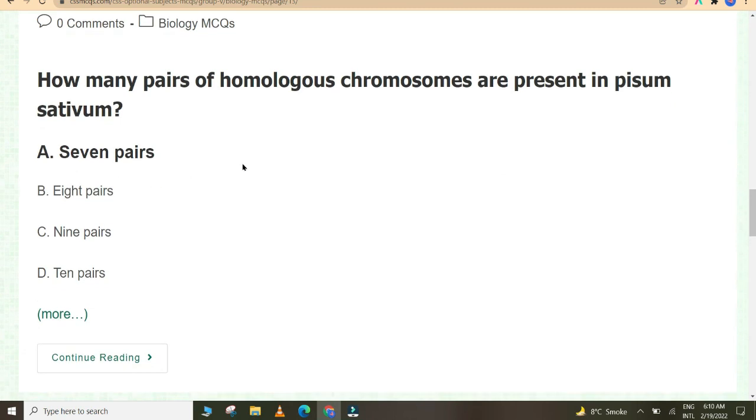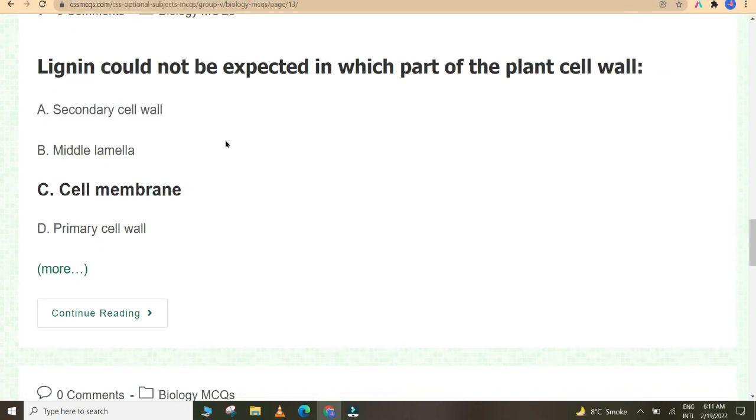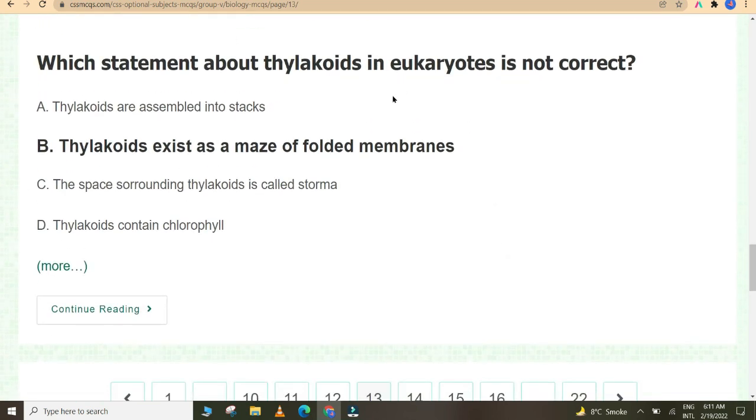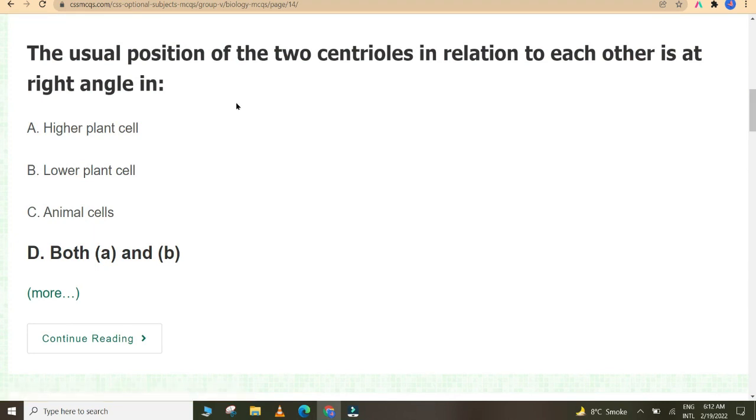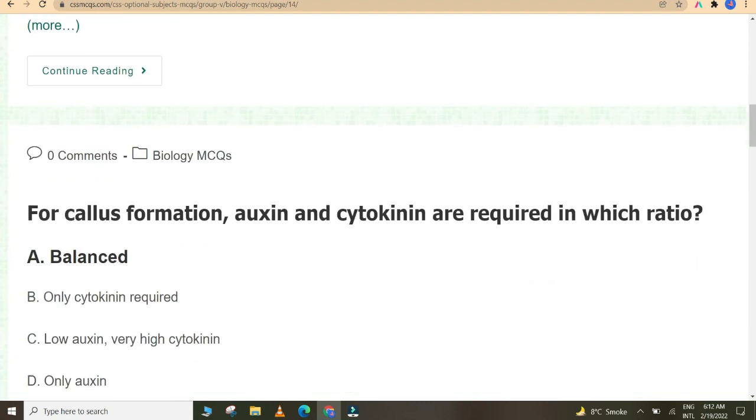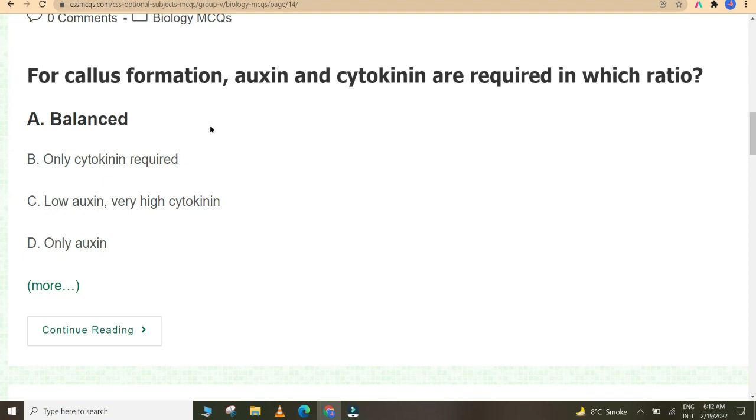How many pairs of homologous chromosomes are present in Pisum sativum? Seven pairs. Lignin could not be expected in which part of the plant cell? Cell membrane. Which statement about thylakoids in eukaryotes is not correct? Thylakoids exist as a maze of folded membranes. The usual position of the two centrioles in relation to each other is at right angle in both higher plant cell and lower plant cell. For callus formation, auxin and cytokinin are required in balanced ratio.